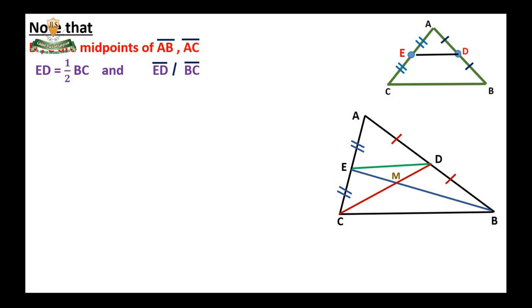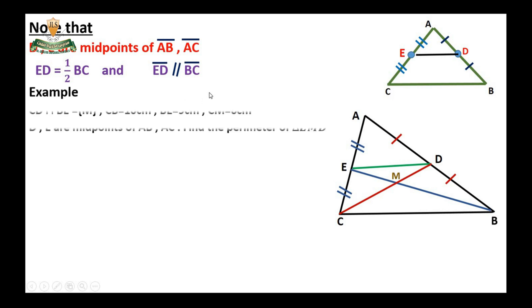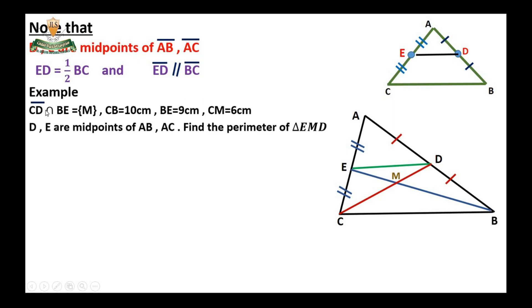Example: CD intersected with BE equals point M. CB equals 10 cm, BE equals 9 cm, and CM equals 6 cm. D and E are the midpoints of AB and AC. Find the perimeter of triangle EMD. To get the perimeter, we find the lengths of EM, MD, and ED, then add them together.